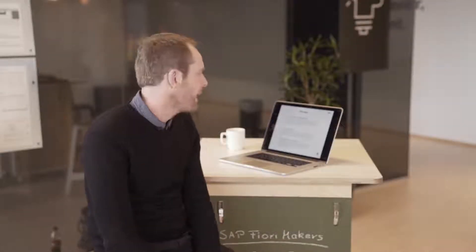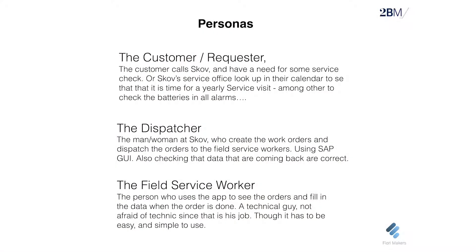We identified three kinds of personas: the customer who owns the farm and calls to report a problem; the field service worker who goes out to do the work; and the dispatcher, who sits in the back office and receives calls from farmers, then dispatches the work orders. They each have different needs and roles, and of course the most important outcome is that the customer is happy.